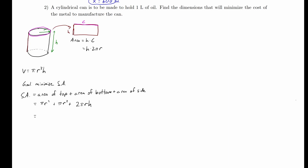Combining like terms, pi r squared plus pi r squared gives 2 pi r squared, plus the side area 2 pi r h. This is the function we want to minimize, but it currently has two variables r and h, so we need to find a constraint to reduce it to one variable.